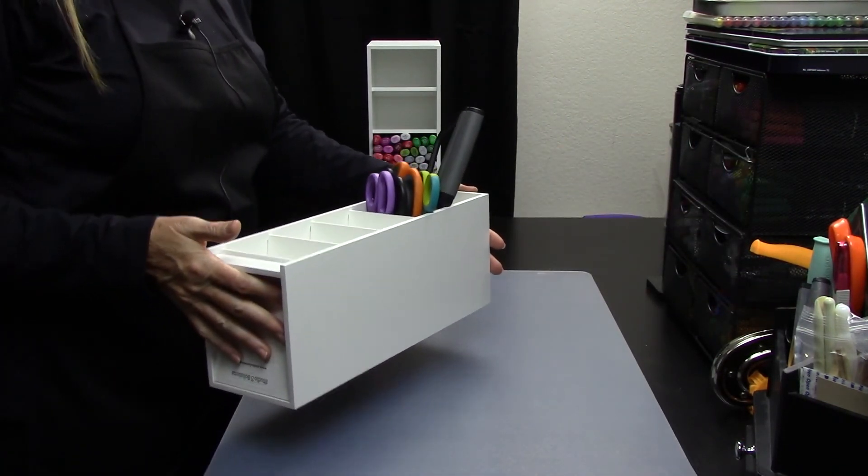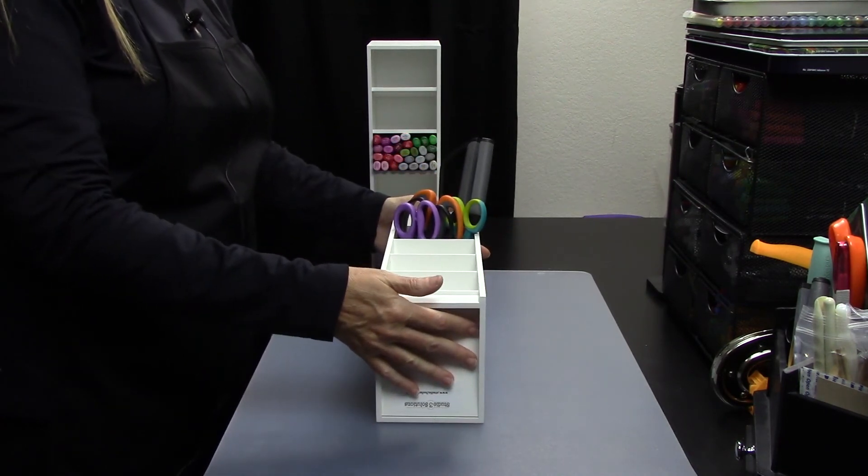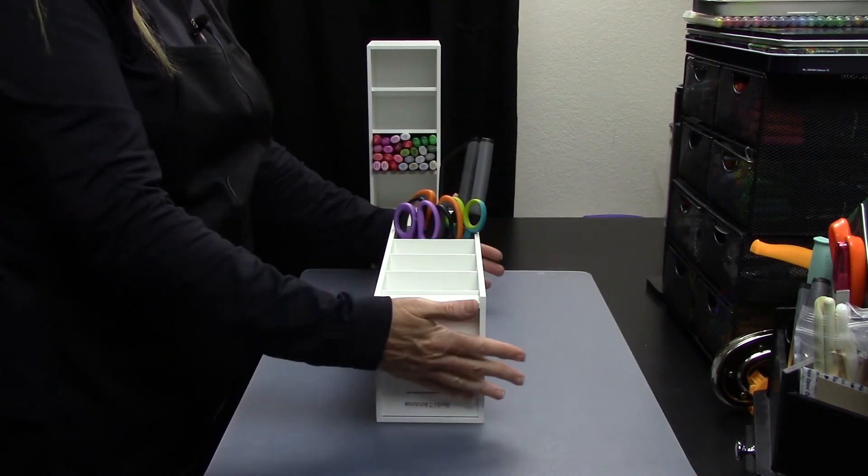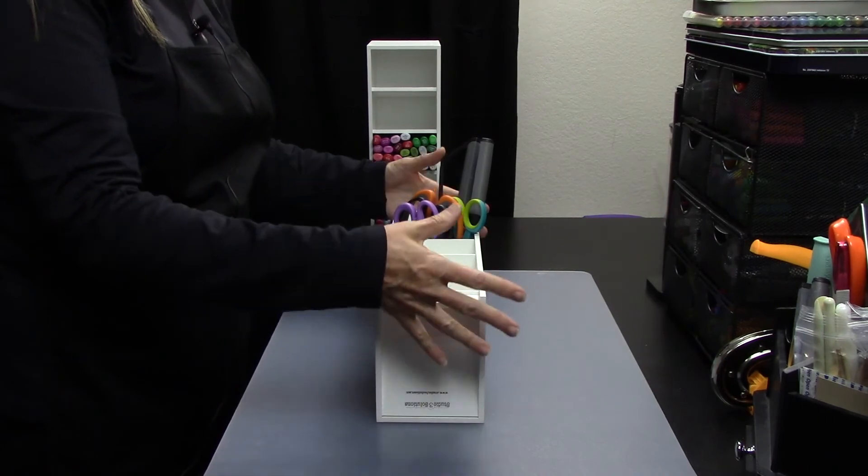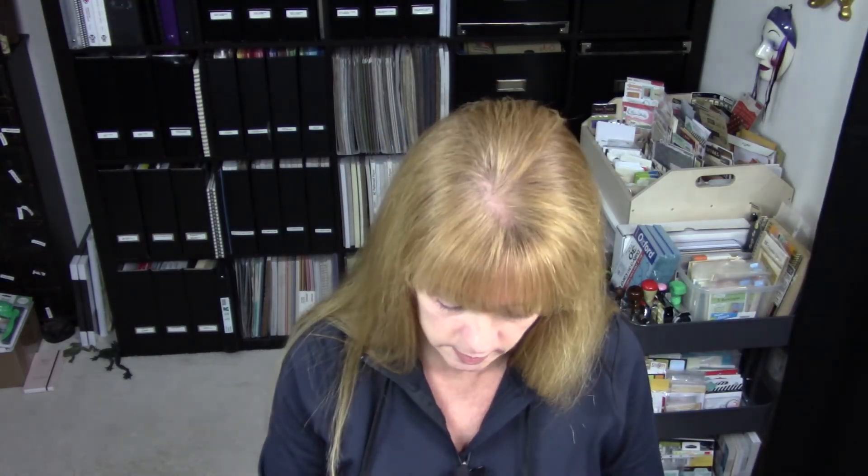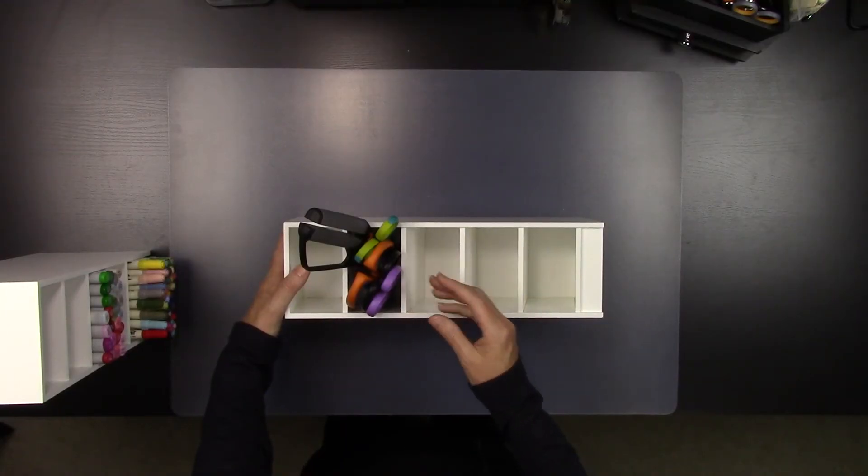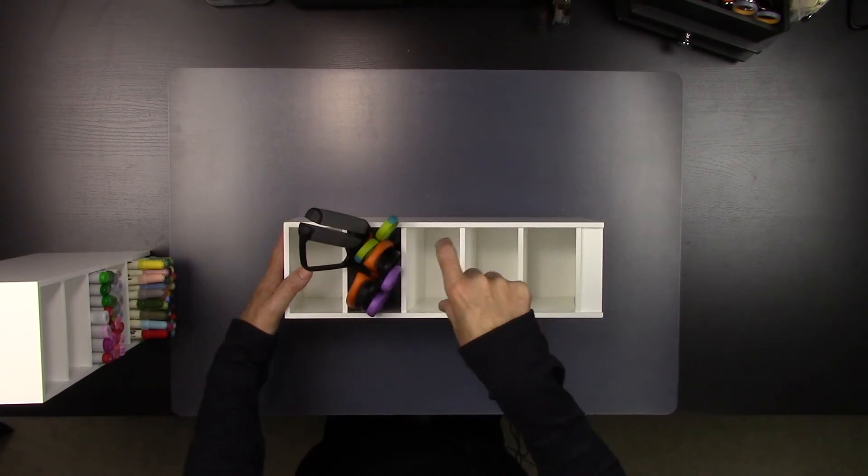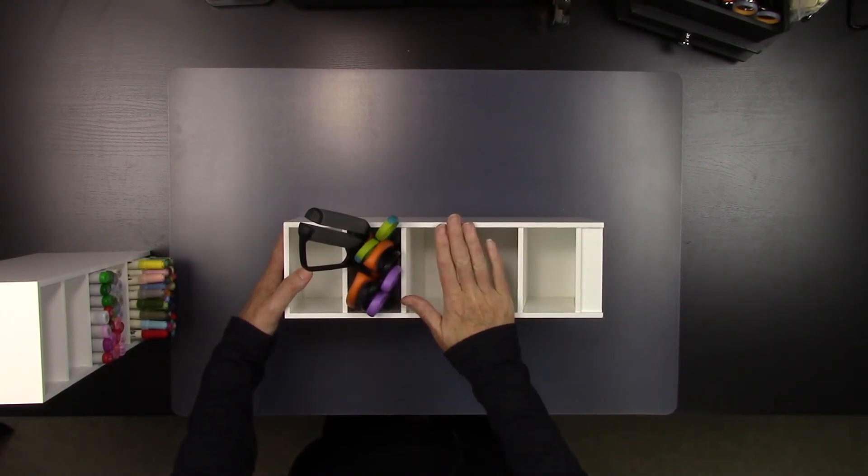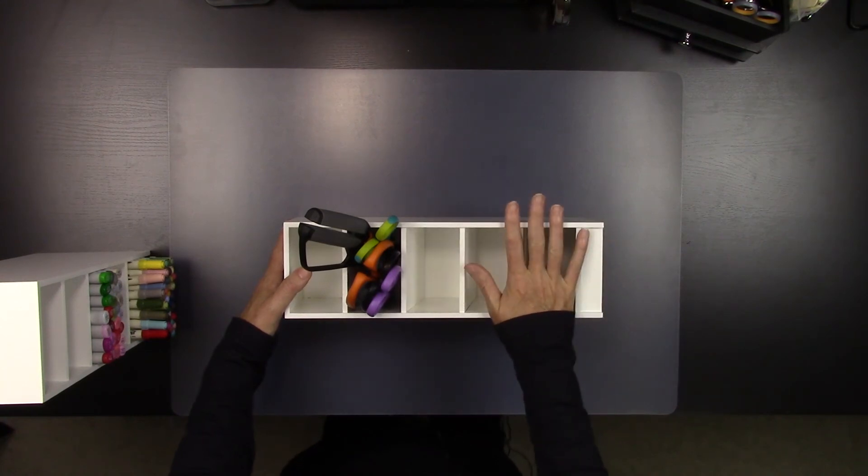It's easy to take with you to the kitchen table, lay out on the table at a crop. It doesn't have a big footprint, so it doesn't take up a lot of space, which is very important. You can also use it for things like dies. If you have thin dies and envelopes, you can put those into these cubbies. And then also for Project Life items.